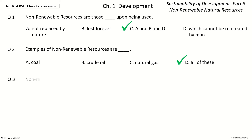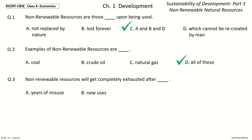Question three: Non-renewable resources will get completely exhausted after — the options are years of misuse, new uses, years of use, some time. The answer is years of use: non-renewable resources will get completely exhausted after years of use.